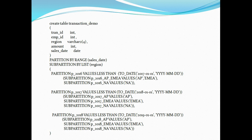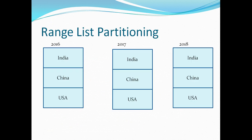An important point: in previous videos I mentioned that when you create a partition, Oracle allocates a segment to that partition where data is stored. But with composite partitioning, the data is actually stored in the sub-partitions. The segments allocated for storage belong to the sub-partitions. For example, with range partitioning and list sub-partitioning by country, the data is stored in sub-partitions — a segment is allocated for India and 2016, and similarly for China — not at the parent partition level.